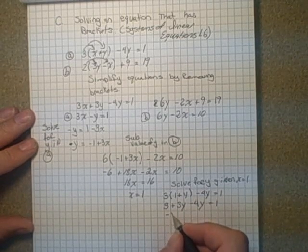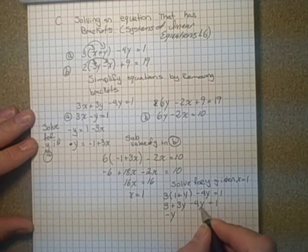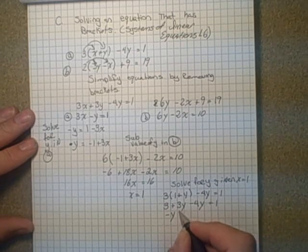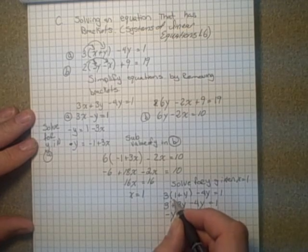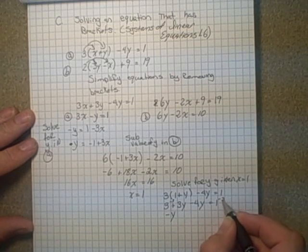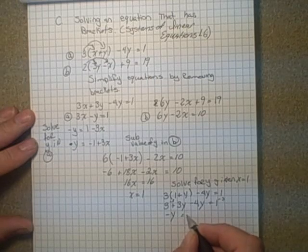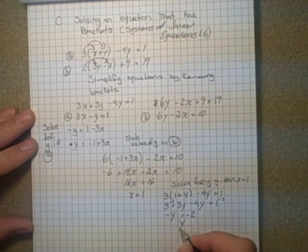So 1, negative y, and then subtract 3 from both sides, is equal to negative 2. So y is equal to 2.